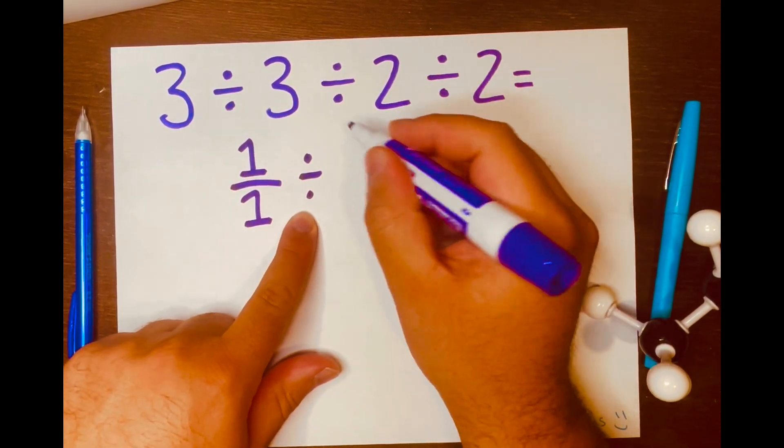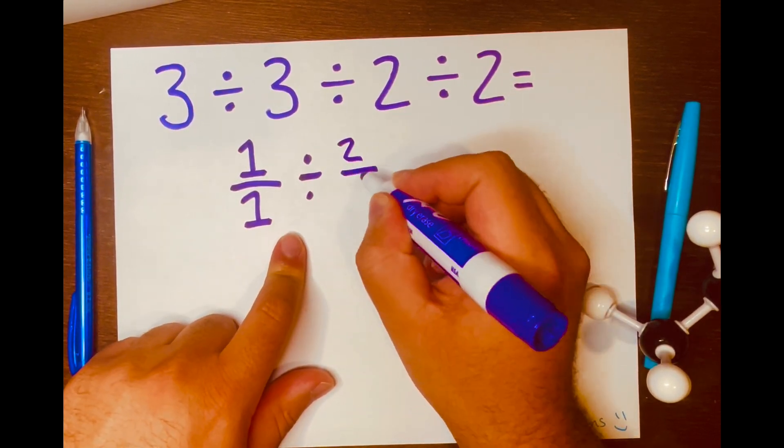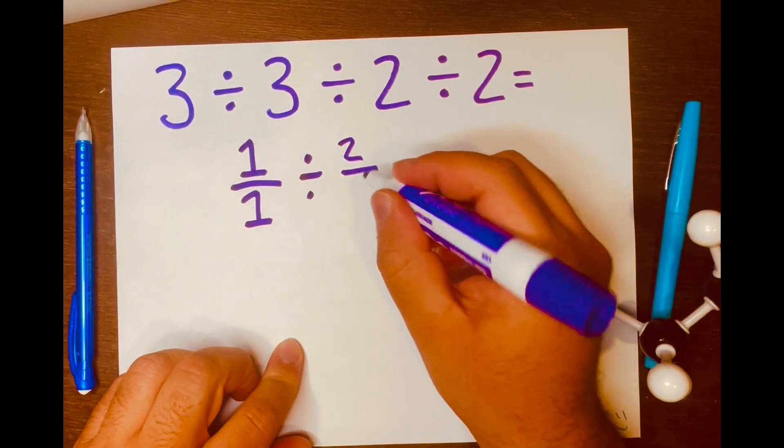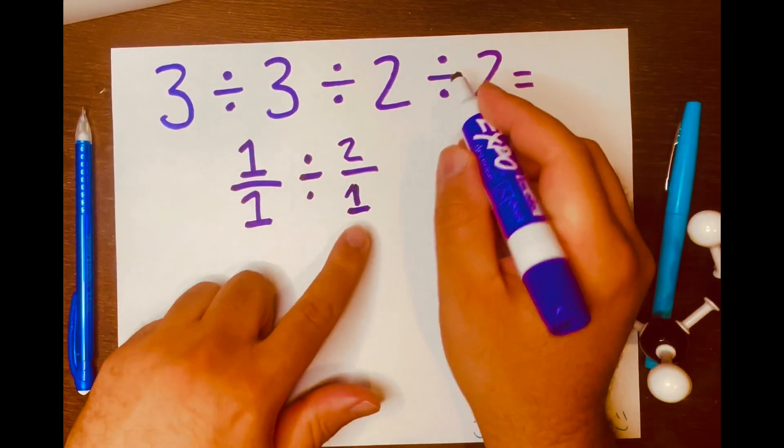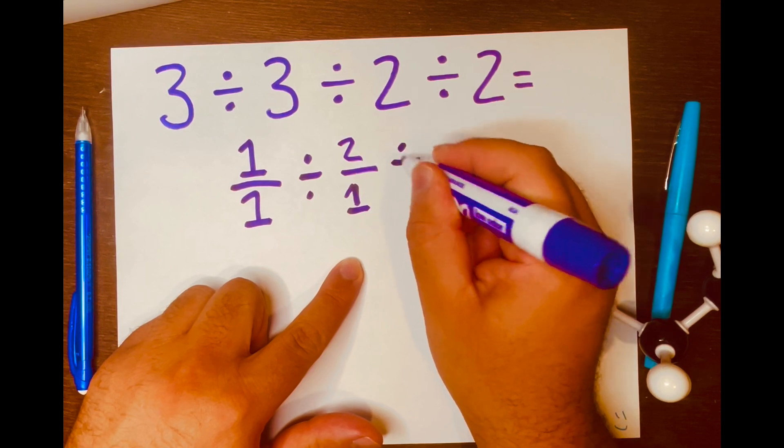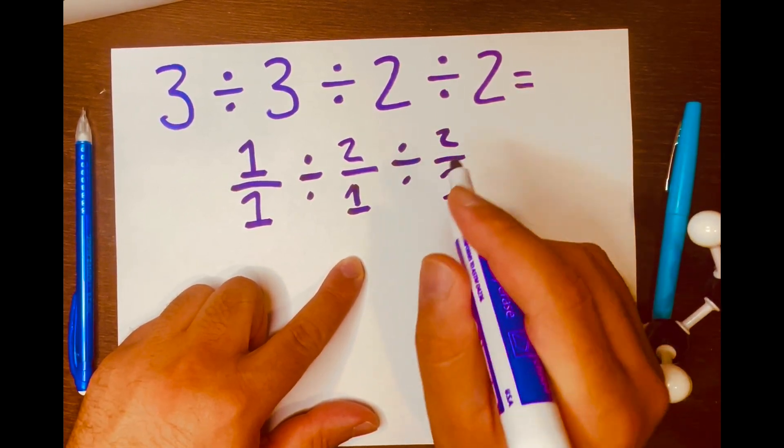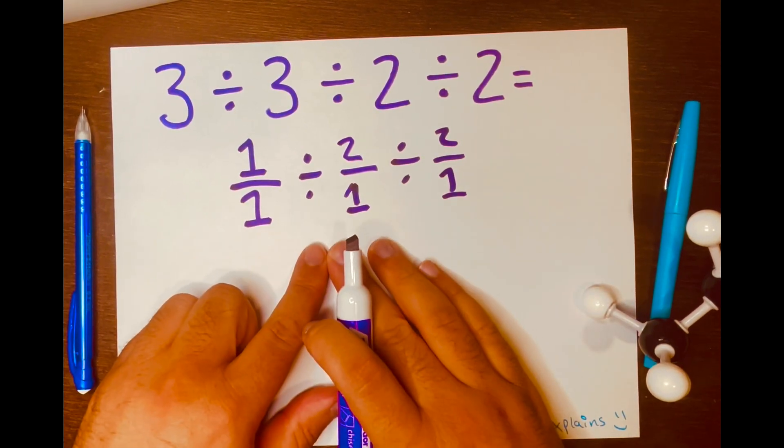And then bring down the 2, but I also want to turn the 2 into a fraction as well to make the math easy like that. And then bring down the division symbol down and bring down the 2 as a fraction. So now we have this.